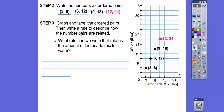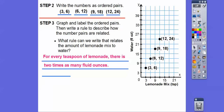Now we're going to write a rule to describe how the number pairs are related. Look at this — what relationship do you see with three and six? Is it the same with six and 12, and nine and 18? Can you see that six is twice three? Twelve is twice six. Eighteen is twice nine. So a nice rule would be: for every teaspoon of lemonade, there are two times as many fluid ounces. In terms of y and x, that's the same as y equals 2x. So now we're getting into graphing equations.